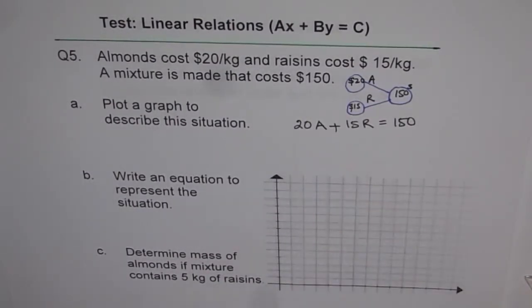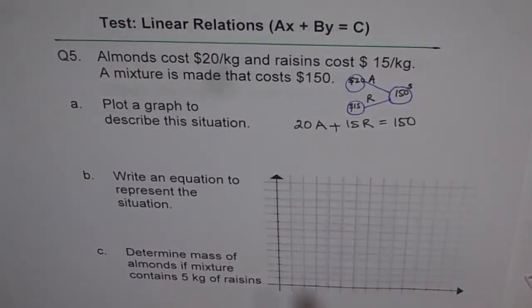Now let us see how to draw this particular graph. Whenever you draw a graph, we have one axis horizontal and one vertical. Horizontal axis normally will have independent variable, and the vertical will have a dependent variable. Here, we could take any one of them as independent since both are related. So here, we will have mass of almonds and R represents mass of raisins.